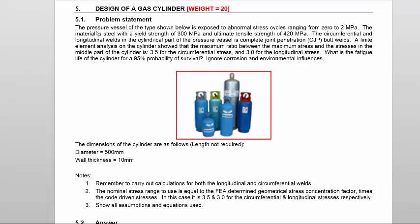The problem statement says the pressure vessel is exposed to abnormal stress cycles ranging from 0 to 2 MPa. The material is steel with a yield strength of 300 MPa and an ultimate tensile strength of 420 MPa.